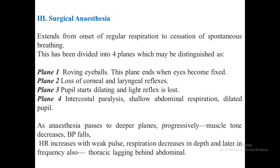Stage three extends from onset of regular respiration to cessation of spontaneous breathing and is divided into four planes. Plane one: revolving eyeball — ends when eyes become fixed. Plane two: loss of corneal and laryngeal reflex. Plane three: pupil starts dilating and light reflex is lost. Plane four: intercostal paralysis, shallow abdominal respiration, dilated pupil. As anesthesia deepens, muscle tone decreases, BP falls, heart rate increases with weak pulse, and respiration decreases.